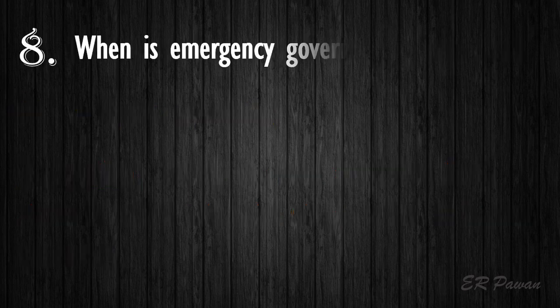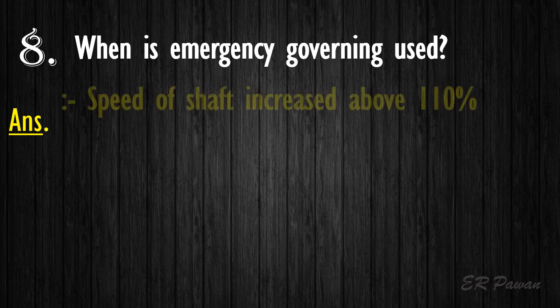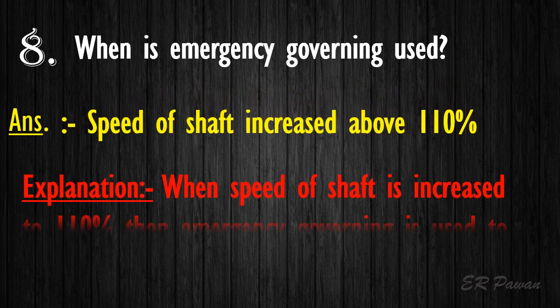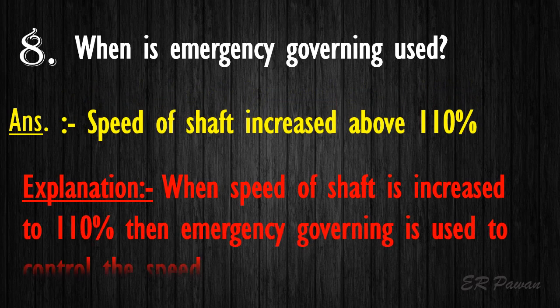Question 8: When is emergency governing used? When the speed of the shaft increases above 110 percent. When the speed of the shaft is increased to 110 percent, emergency governing is used to control the speed.